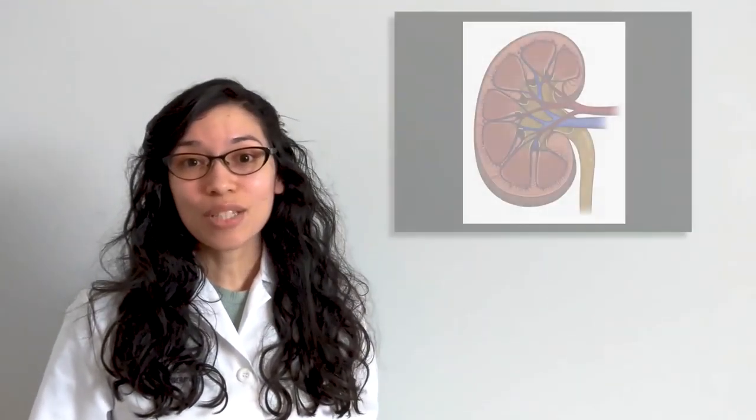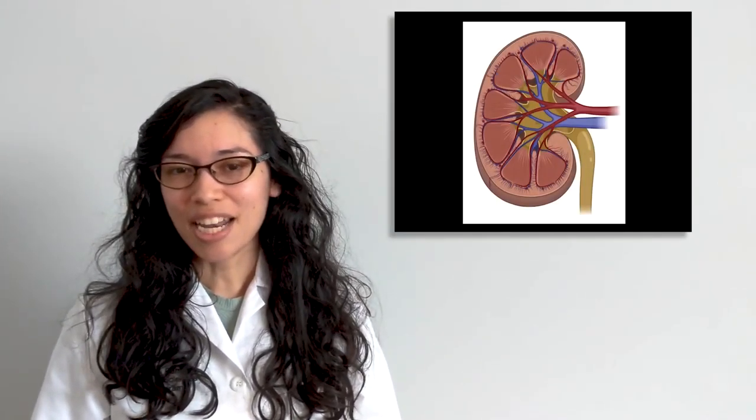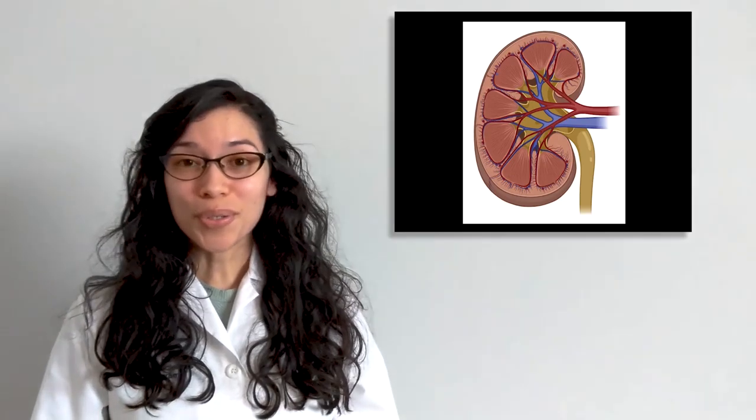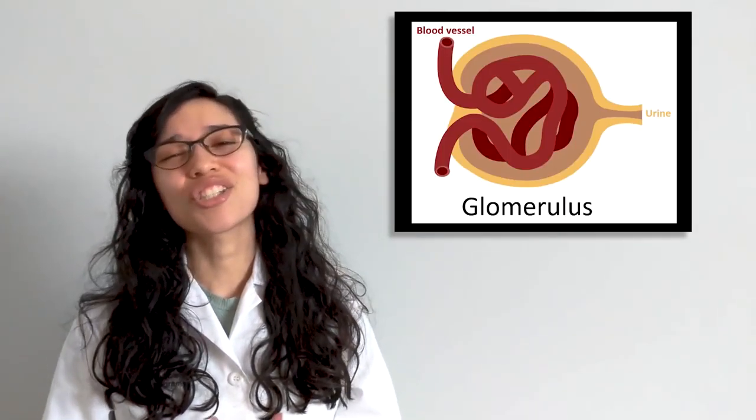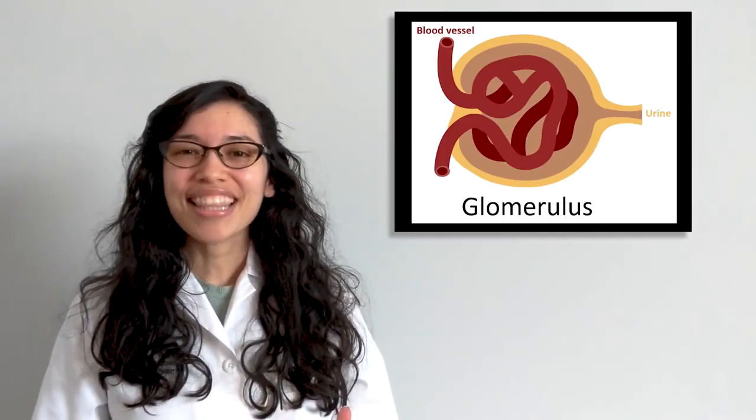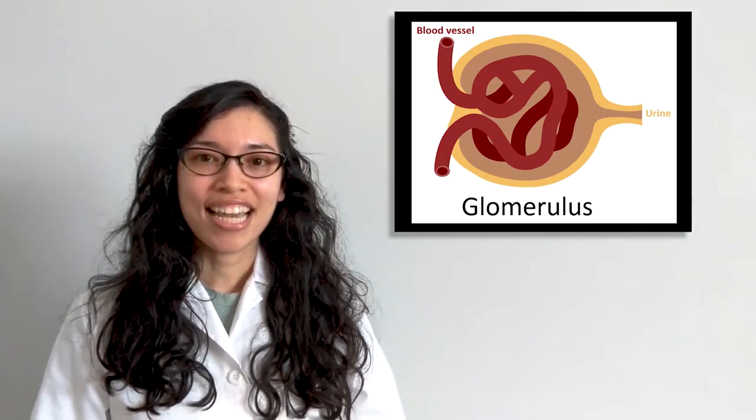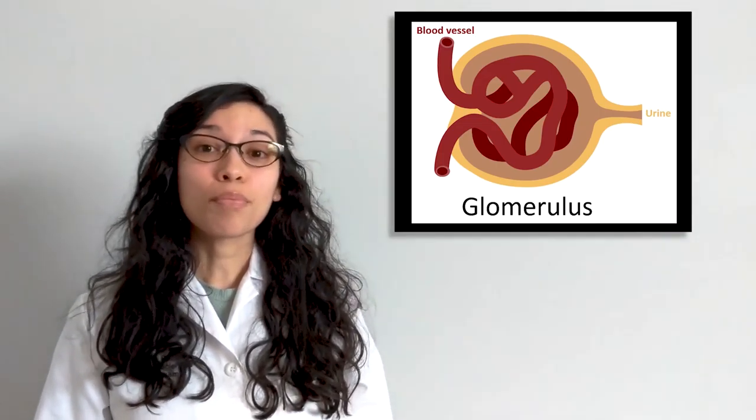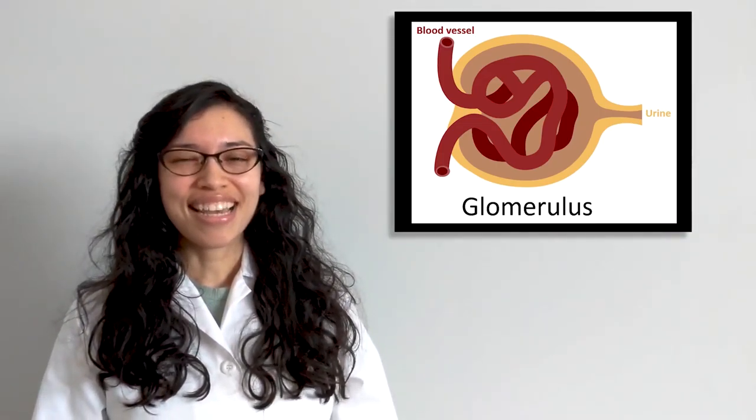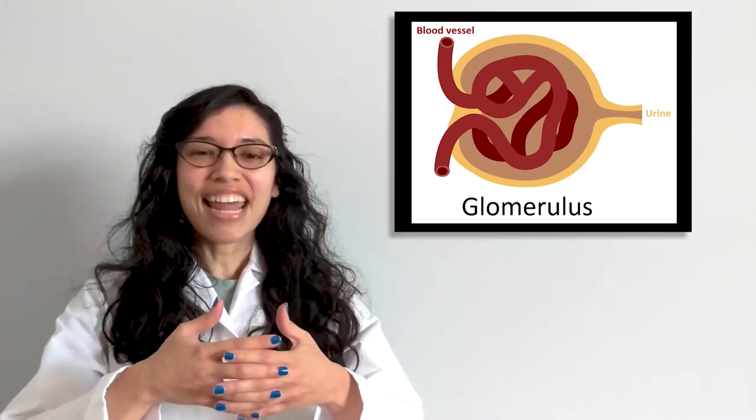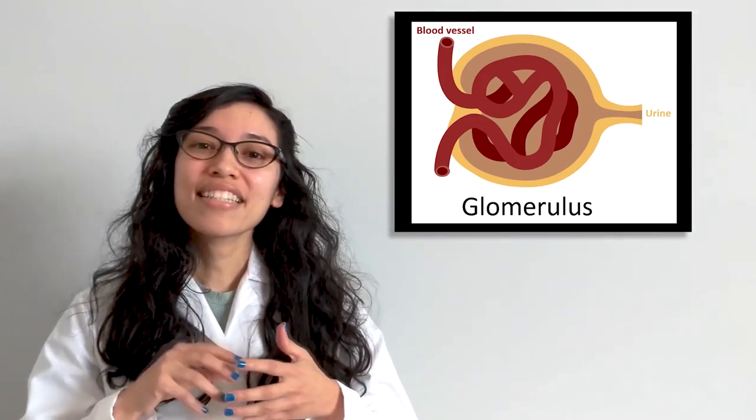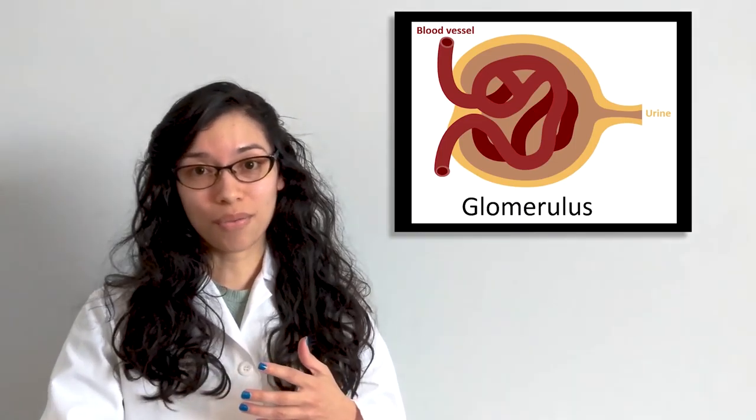So let's take a little closer look at the kidney. This is what the kidney looks like on the inside. And if we zoom in, this is the star of the show. This is called the glomerulus, and it's what separates the proteins from the waste. It acts like a net. And it keeps in all the proteins and then all the waste gets through.